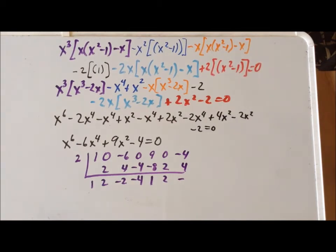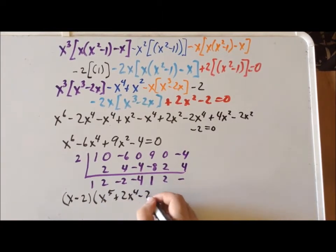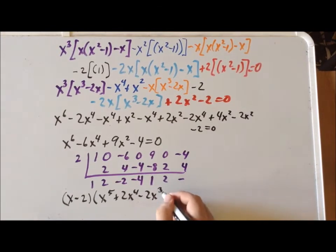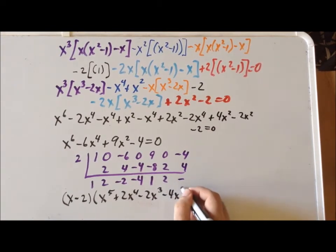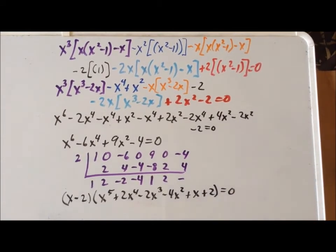Therefore, we can factor the polynomial into x minus 2. And then these are the coefficients for the other powers of x. So this gives us x to the fifth, plus 2x to the fourth, minus 2x cubed, minus 4x squared, plus x plus 2. And that at least gives us the first root, which is x equals 2.